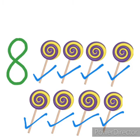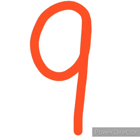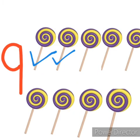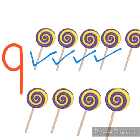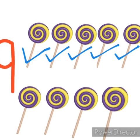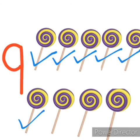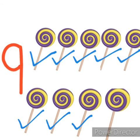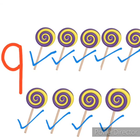Now number 9. 9 means how many? Correct, very good — 9 lollipops. So children, let's count. 1, 2, 3, 4, 5, 6, 7, 8, 9. 9 means 9 lollipops.